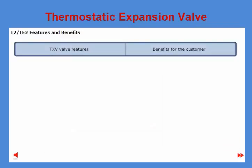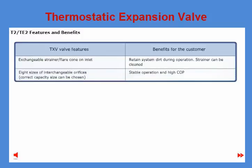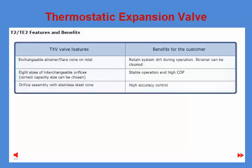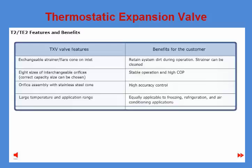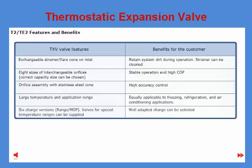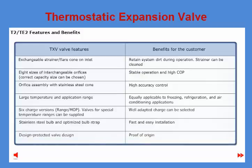General features and benefits of the T2 valve include: exchangeable strainer or flare cone on inlet, eight sizes of interchangeable orifices so the correct capacity size can be chosen, orifice assembly with stainless steel cone, large temperature and application range, six charge versions with range or MOP options, valves for special temperature ranges, stainless steel bulb with optimized bulb strap, and a protected valve design.